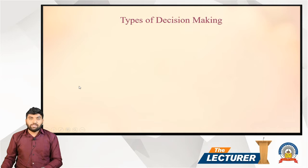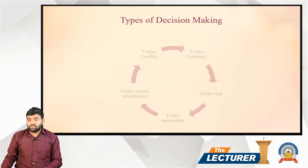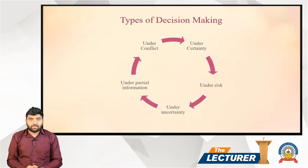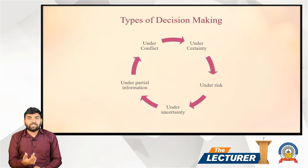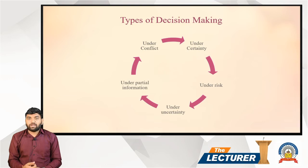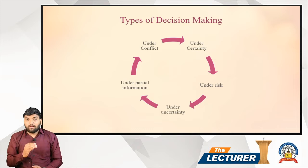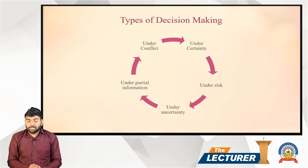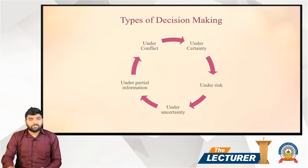There are different types of decision making situations. The first type is decision making under certainty. The second type is decision making under uncertainty — for example, when the price per piece increases unexpectedly, that situation is called uncertainty.